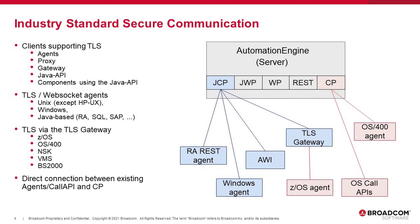Industry Standard Secure Communication. Atomic Automation now uses TLS, SSL, and WebSocket-based communication to provide a secure and internet-friendly connection between Atomic Automation components, including the Automation Engine, Atomic Web Interface, agent-to-server communication, as well as REST and Java APIs. Even though Atomic Automation now uses TLS and SSL as default, several options exist to enable existing version 12.3 agents as well as legacy agents to connect to a version 21 server. This includes a new TLS gateway component to facilitate direct agent-to-agent file transfer between version 21 agents and non-TLS/SSL-enabled agents.